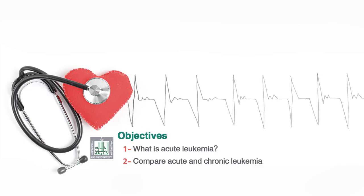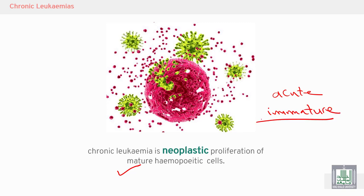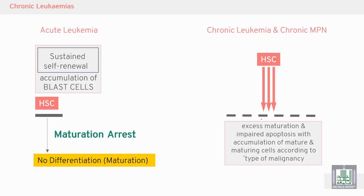We will continue hematological malignancies for medical students. Today we will discuss chronic leukemias. Chronic leukemia is a neoplastic proliferation of mature hematopoietic cells — this is very important in comparison to acute leukemias. In chronic leukemia, there is proliferation of mature cells arising from hematopoietic stem cells, with impaired apoptosis and accumulation of mature cells.